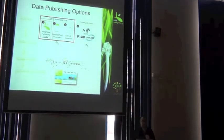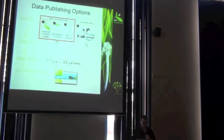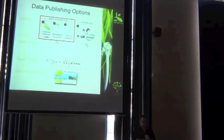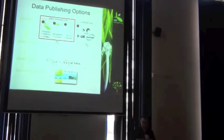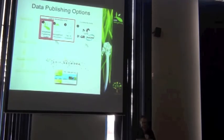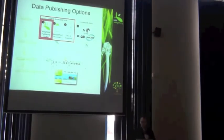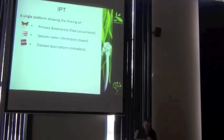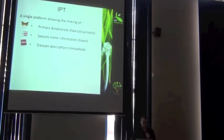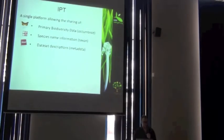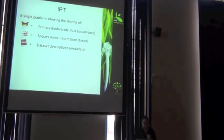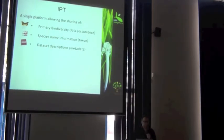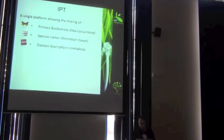So again, what are the tools that you can use to share Darwin Core Archives? Well, the IPT and spreadsheet processors which we're concentrating a lot on this week. Now is it any surprise to you after all these slides that the IPT is a single platform allowing the sharing of our primary biodiversity data, our taxonomic data, and our metadata? That's what the IPT does.